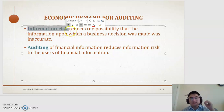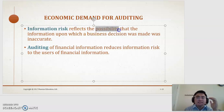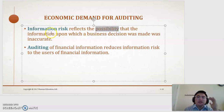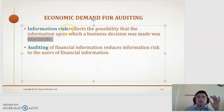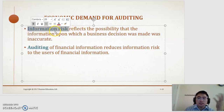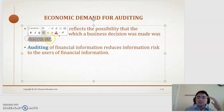Information risk reflects the possibility that the information upon which a business decision was made was inaccurate. The key word here is that information risk is the risk that information is inaccurate.